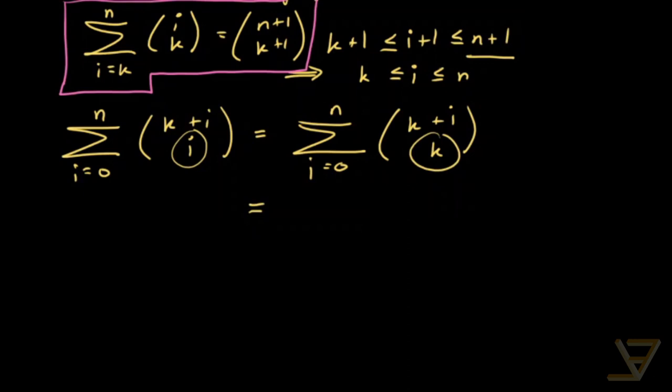And this is, now we're going to change up the indices. So we're going to go from i equals to k through to k plus n. And we have i choose n now. And this, by the ordinary hockey stick identity,